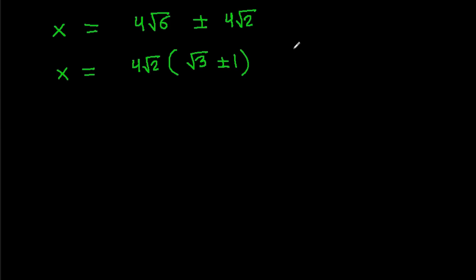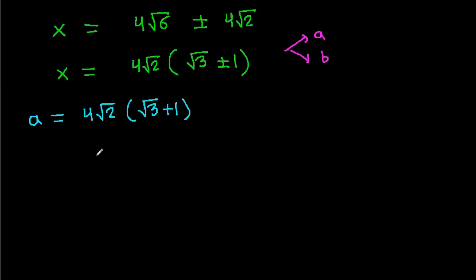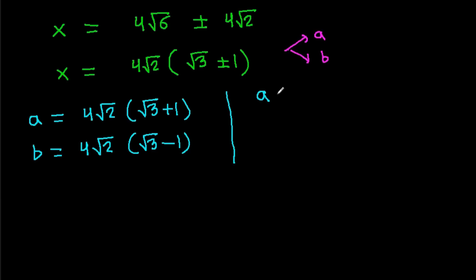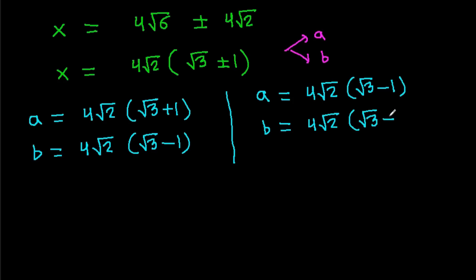The roots of the equation were a and b. So either a equals 4√2(√3 + 1) and b equals 4√2(√3 − 1), or a equals 4√2(√3 − 1) and b equals 4√2(√3 + 1). Since b is greater than a, the second case is not possible, so a equals 4√2(√3 − 1) and b equals 4√2(√3 + 1).